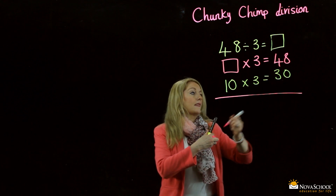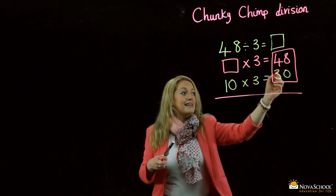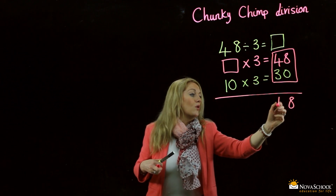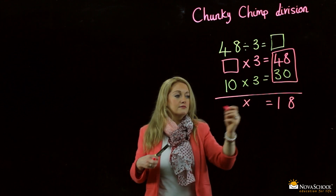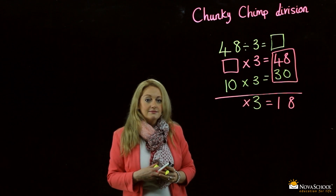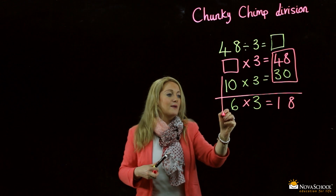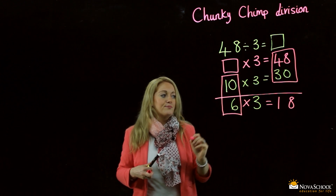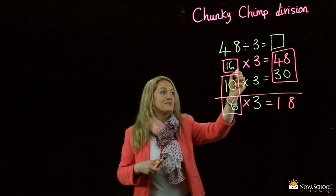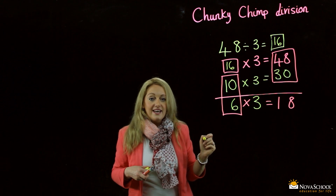We take 48 and 30 and we do a subtraction. 8 subtract 0 is 8. 4 subtract 3 is 1. Now I'm going backwards — what do we times by 3 to get 18? 6. I'm going to place a box around these two numbers. And what do I have? 16. I'm going to place 16 in here, and 16 in here, because 48 divided by 3 is 16.